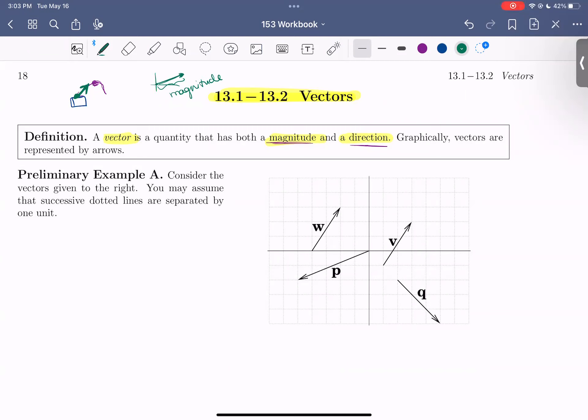And so that's why it also makes sense that arrows are representative of magnitudes and directions. Because arrows, like in this graph here, point to a direction over 2, up 3, and are a certain length or magnitude.